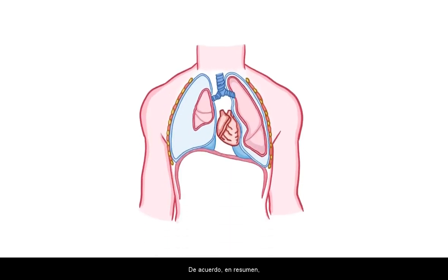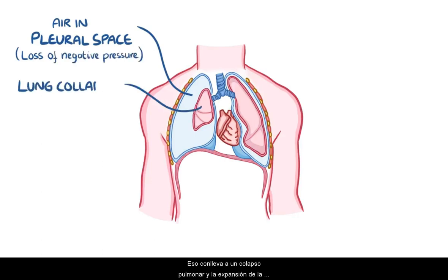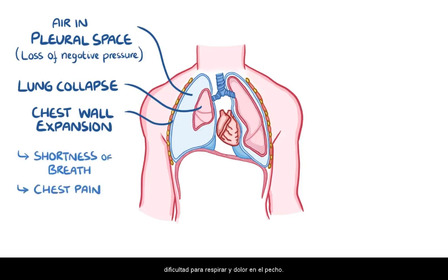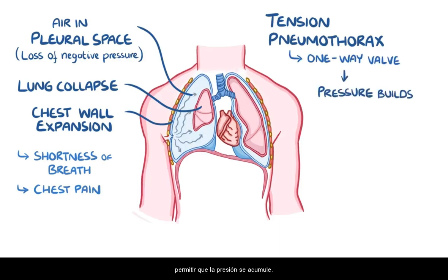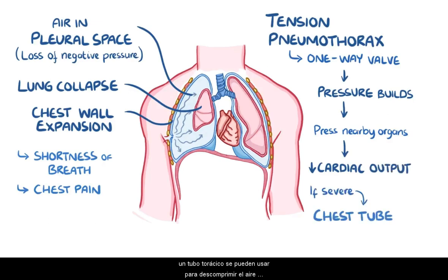As a quick recap: a pneumothorax is when there's air in the pleural space and a loss of negative pressure. That leads to lung collapse and chest wall expansion, which can cause shortness of breath and chest pain. A tension pneumothorax is when there's a flap of tissue creating a one-way valve, and it can allow pressure to build up. Over time, that can press against nearby organs like the heart and potentially affect cardiac output. In severe cases, a needle or chest tube can be used to decompress the air in the pleural space.